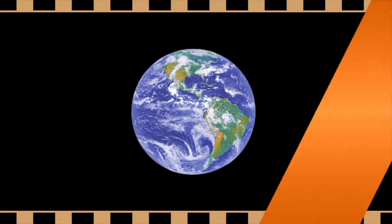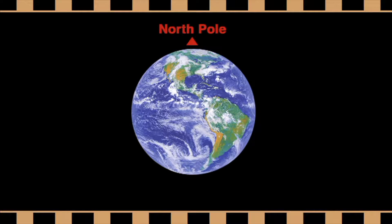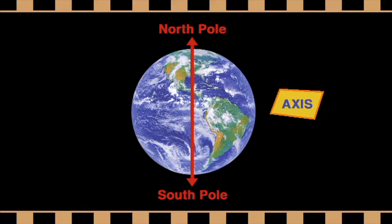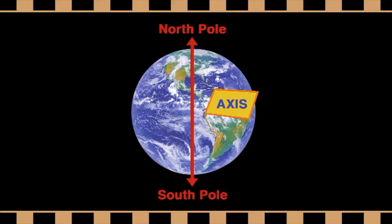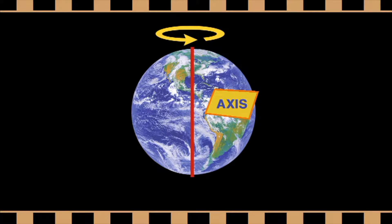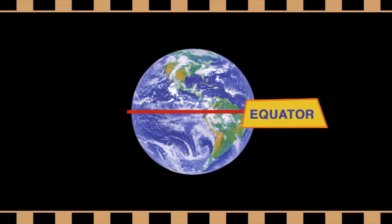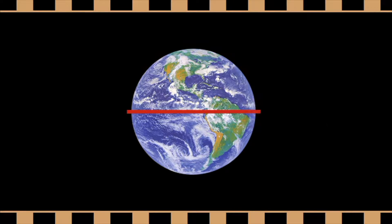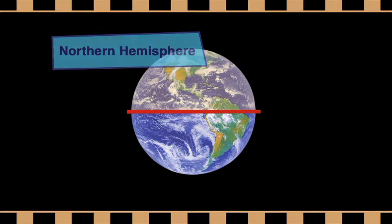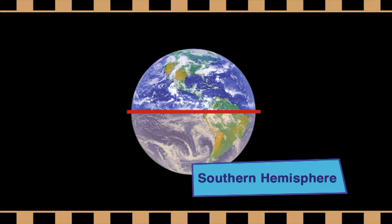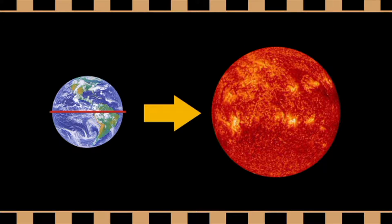To understand how it works, you have to know a little bit more about the Earth. At the top of the Earth is the North Pole, and at the bottom is the South Pole. There is an imaginary line called the axis that goes through the North Pole, through the Earth, to the South Pole. The Earth spins or rotates on its axis. In the middle of the Earth, there is another imaginary line called the equator, which divides the Earth into two halves: the Northern Hemisphere and the Southern Hemisphere. The equator is always facing the sun directly, which is why places around the equator never get very cold. The further away from the equator you get, the colder it gets.